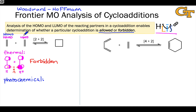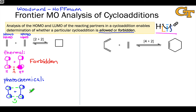Looking at the two HOMOs of ethylene — since those orbitals have identical shapes, we can absolutely get in-phase overlap at both ends of both pi systems at the same time. This means that this cycloaddition, under photochemical conditions, is allowed. In fact, it goes very rapidly. Photoexcitation is one of the only ways to get a 2+2 cycloaddition to go via a concerted pericyclic mechanism.